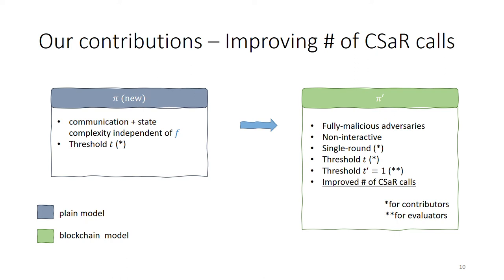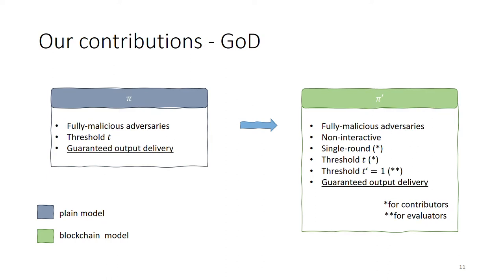In addition to our main result, we provide further variations. In the first one, we show that in our scheme the communication and state complexity of the underlying MPC protocol are very important, as they have implications for the number of CSAR calls that we make in our resulting construction. To improve the efficiency of our scheme, we propose an MPC protocol which achieves the property that its combined communication and state complexity are independent of the function f that we are trying to compute. Using this new protocol as the base of our transformation, we achieve a result similar to our non-interactive construction, which now additionally has an improved number of CSAR calls.